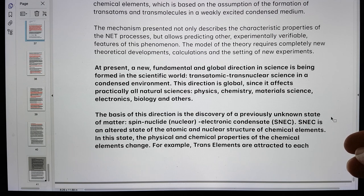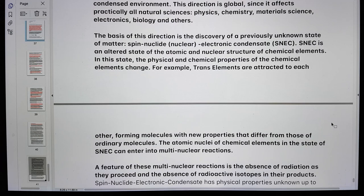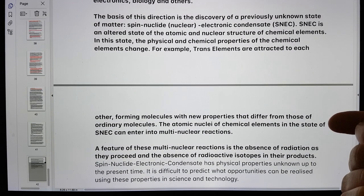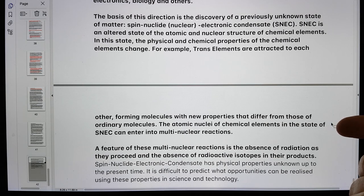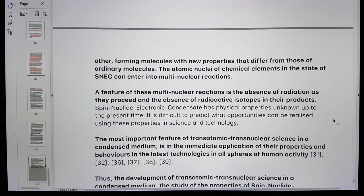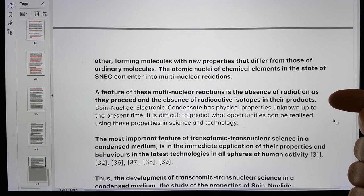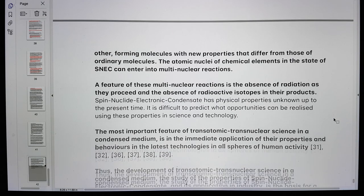The basis of this direction is the discovery of a previously unknown state of matter, the spin nucleoid electronic condensate, abbreviated to SNEC. SNEC is an altered state of the atomic and nuclear structure of chemical elements. In this state, the physical and chemical properties of chemical elements change. Trans elements are attracted to each other, forming molecules with new properties. The atomic nuclei of chemical elements in the state of SNEC can enter into multi-nuclear reactions. A feature of these multi-nuclear reactions is the absence of radiation as they proceed and the absence of radioactive isotopes in their products.